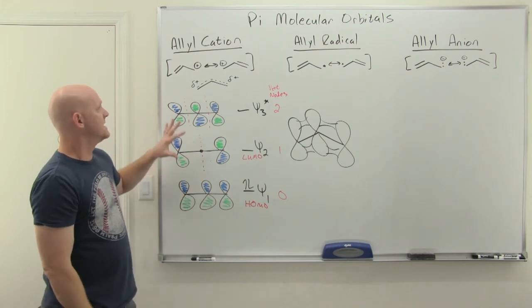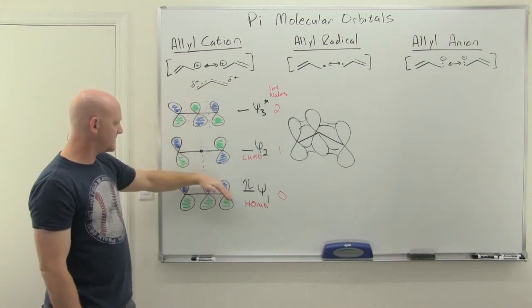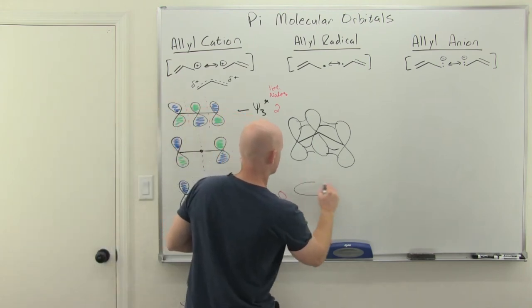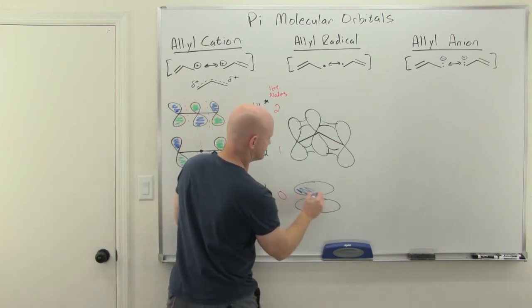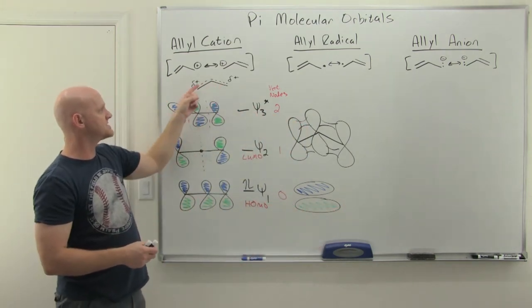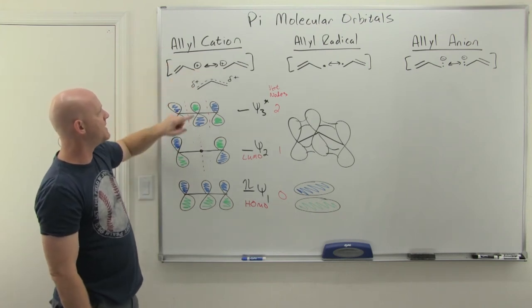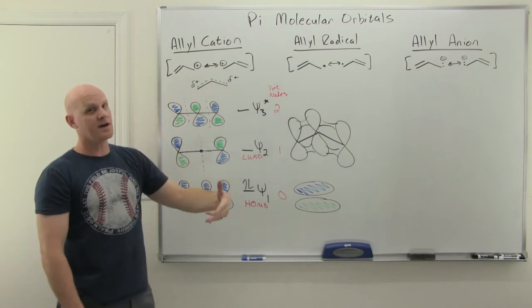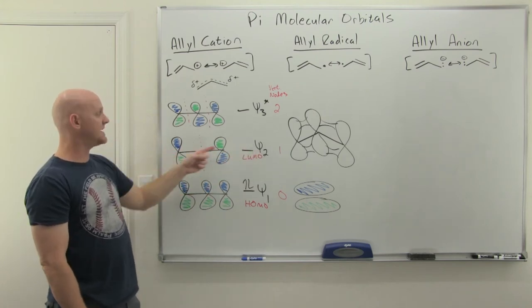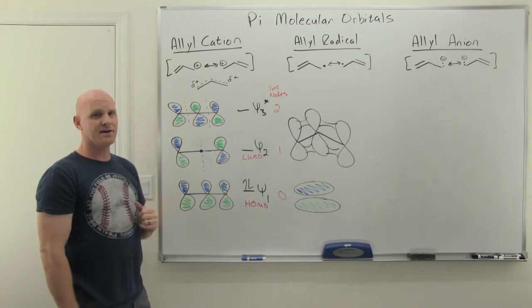Looking at psi 2, you can see the resonance hybrid represented: electron density is spread across the entire region in psi 1, corresponding to pi electrons smeared across all three atoms. The partial positive charges are on the two end atoms — where electrons are missing — and that's represented by psi 2, where electron density is absent on the middle atom but present on the ends. With the carbocation it's a bit abstract, but it will make more sense when we look at the radical and anion.